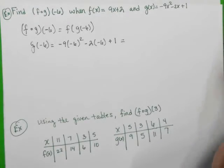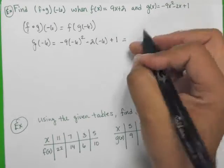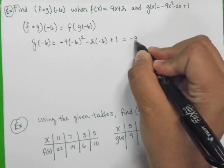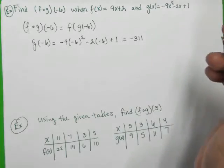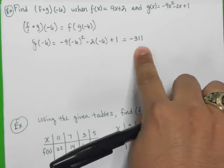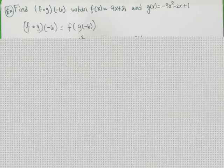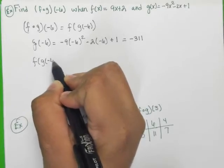All righty. Okay. Now, just to make a long story short, all right, this happens to work out to be negative 311. All right, so go ahead and figure out, do the order of operations, and then you're sure to get this right here, negative 311. So now, we're going to say, okay, well, what is F of G of negative 6?